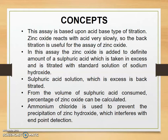Concept: this assay is based upon acid-base type of titration. Zinc oxide reacts with acid very slowly, so back titration is useful for the assay of zinc oxide. In this assay, the zinc oxide is added to a definite amount of sulfuric acid, which is taken in excess and is titrated with a standard solution of sodium hydroxide. The sulfuric acid in excess is back titrated, and from the volume of sulfuric acid consumed, the percentage of zinc oxide can be calculated.